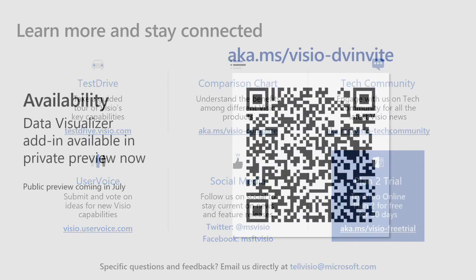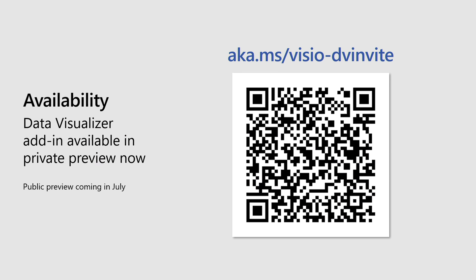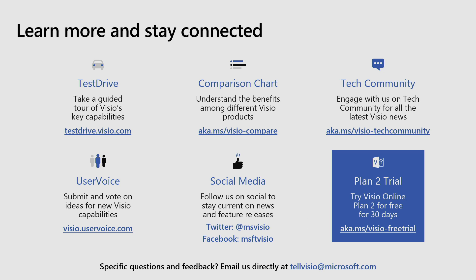If you want to stay connected, reach out to us through any of the provided channels. The easiest way is to email tellvisio@microsoft.com with your asks. The private preview currently supports creation of process flowcharts only — organization charts are coming soon. If you have requests for other diagram types from Excel or other data sources, feel free to reach out. We have a booth for Excel and Visio where you can find me for any questions. Thank you, and I apologize for the technical glitches with the resolution — I hope it was worth it.